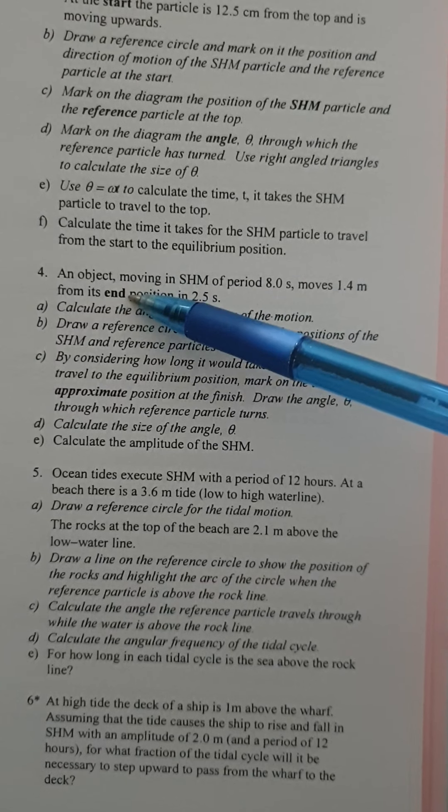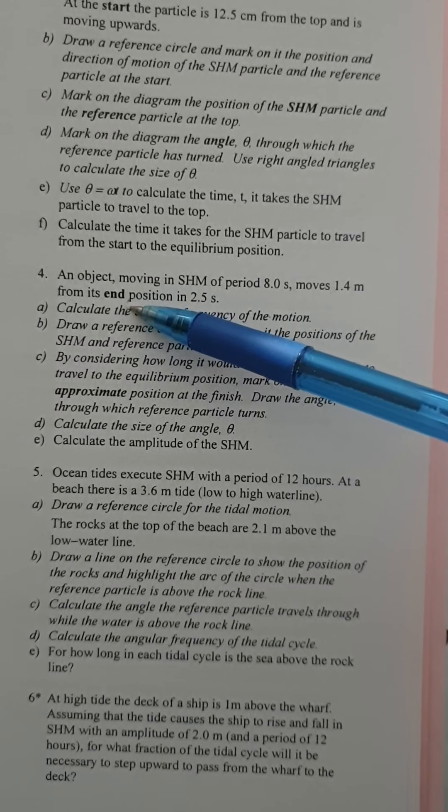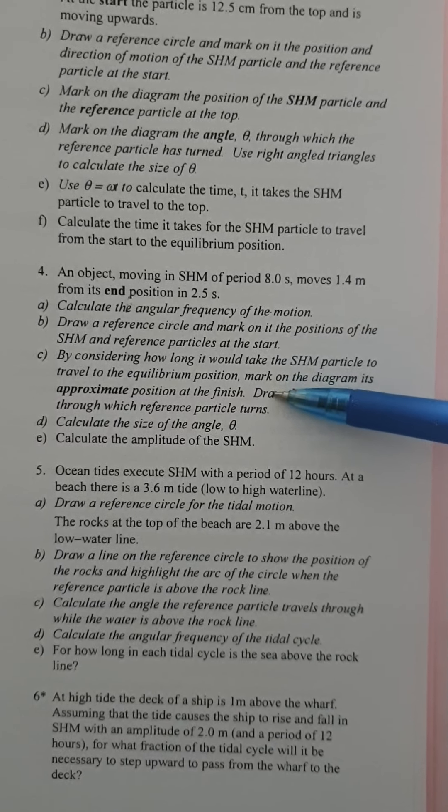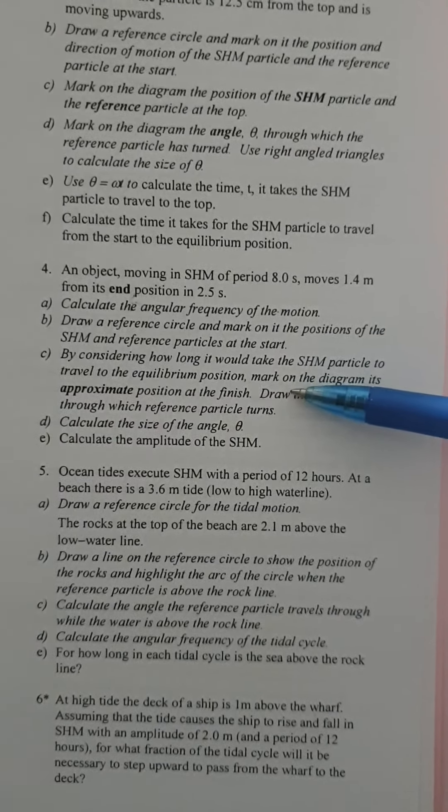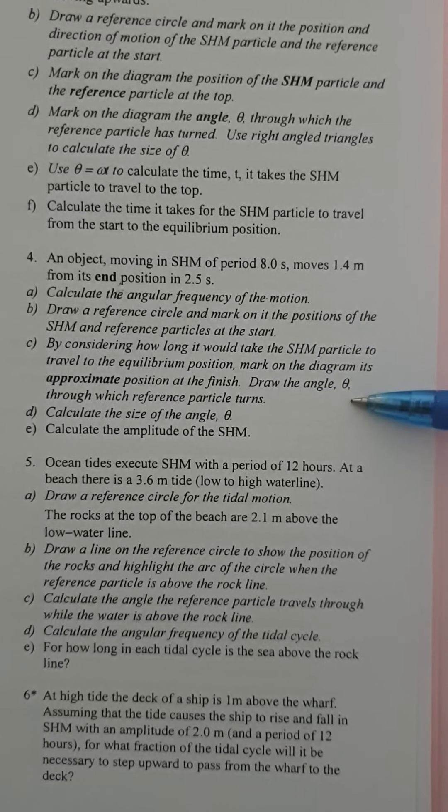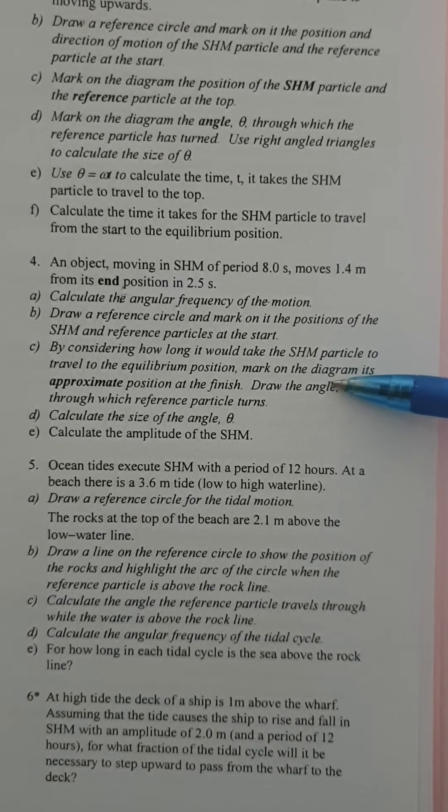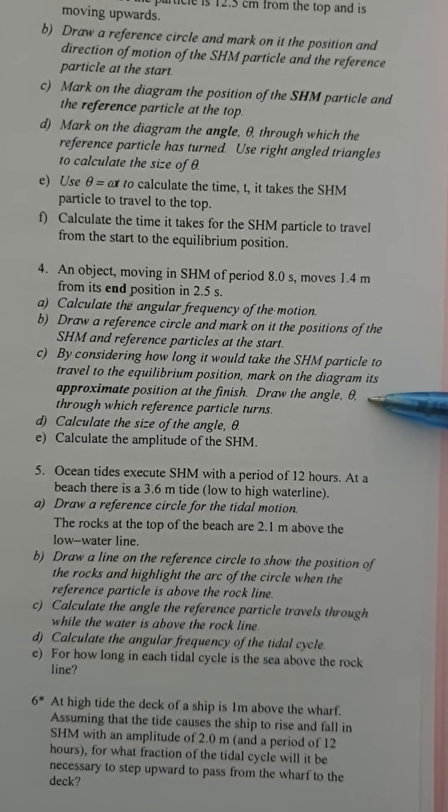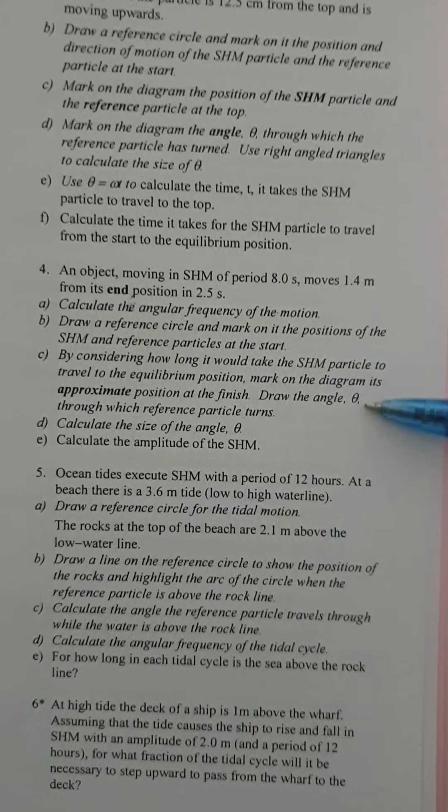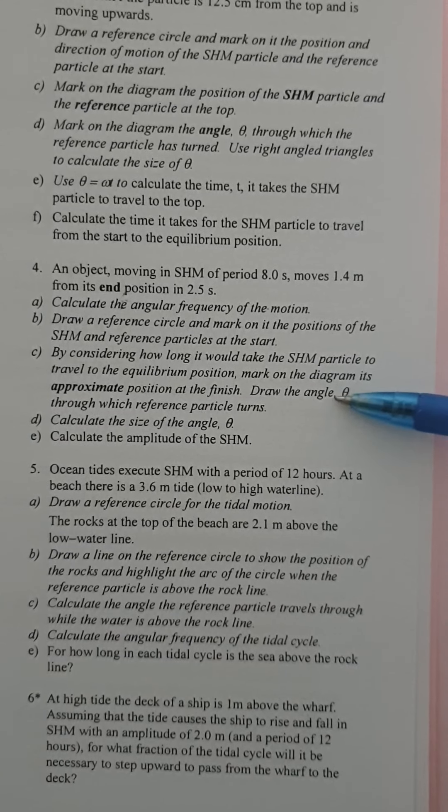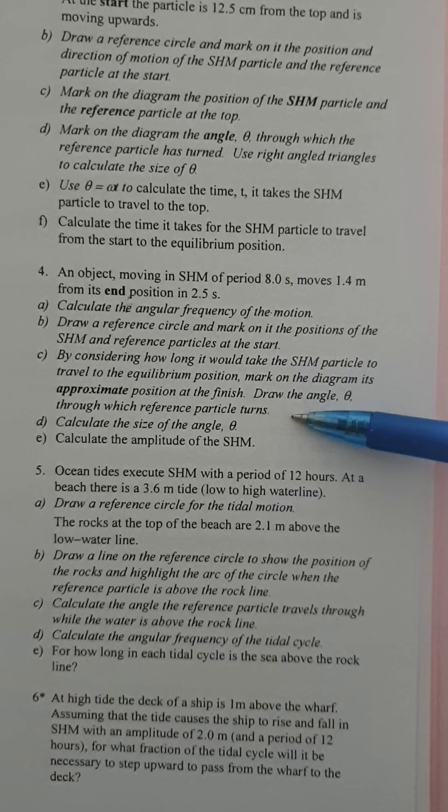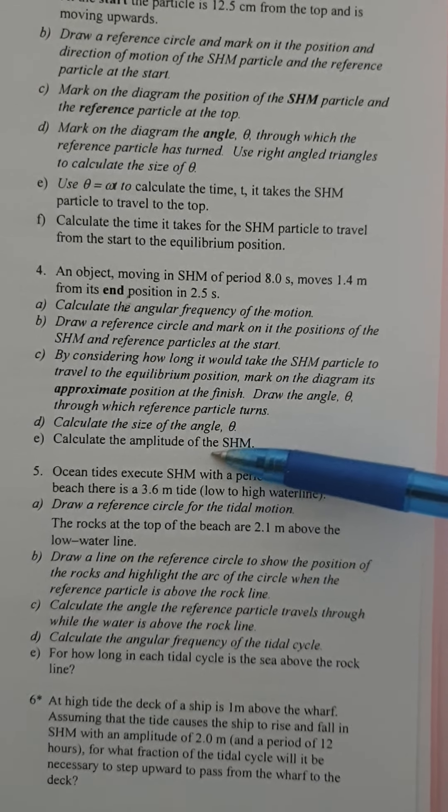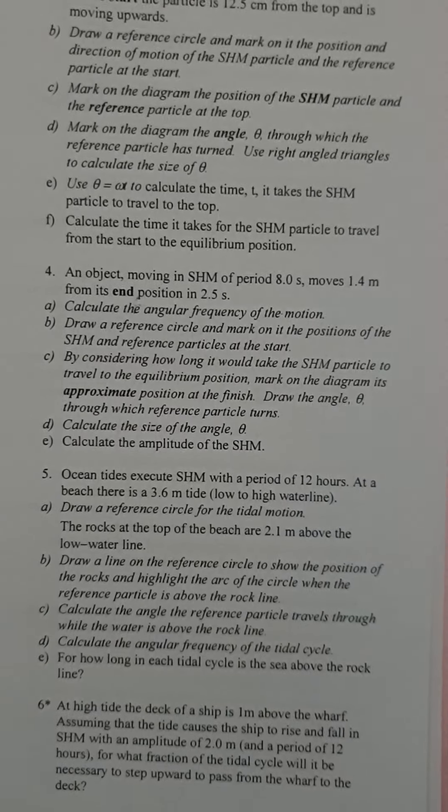So it says end position so let's assume it goes from the bottom. I'll just show you the working in a moment. Then what we have to do is by considering how long it would take the SHM particle to travel to the equilibrium position, mark on the diagram an approximate position at the finish and then we've got to draw the angle theta through which the reference particle turns and once we've drawn this we have to calculate the angle and then calculate the amplitude of simple harmonic motion.